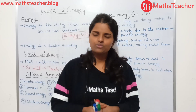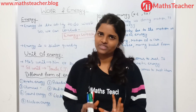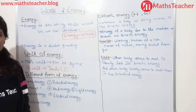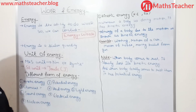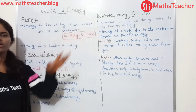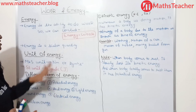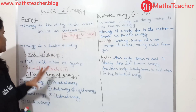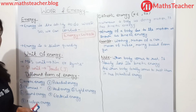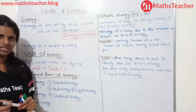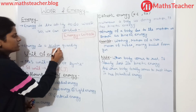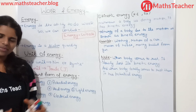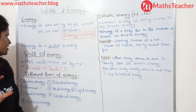So energy and work done are equal to each other. Energy is the ability to do work. If there is no energy, then work is not possible. So we can conclude: energy is equal to work. Energy is a scalar quantity, just like work done. Scalar means these quantities have only magnitude, not direction.